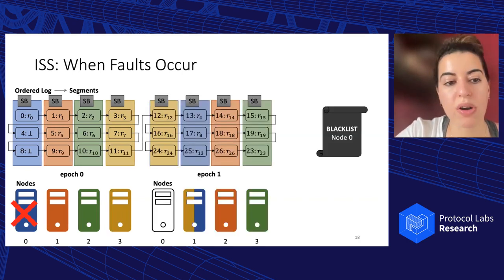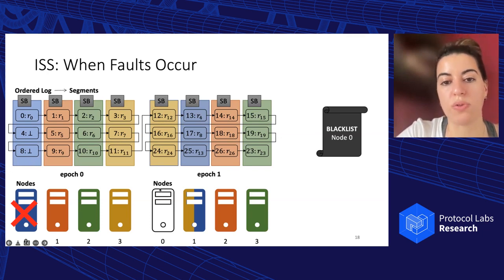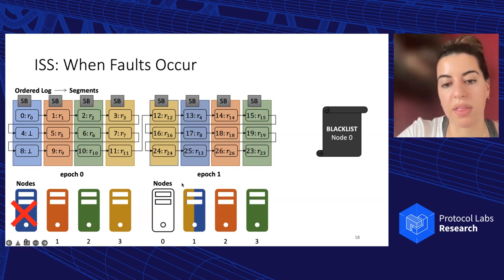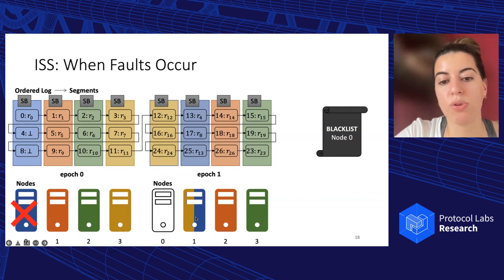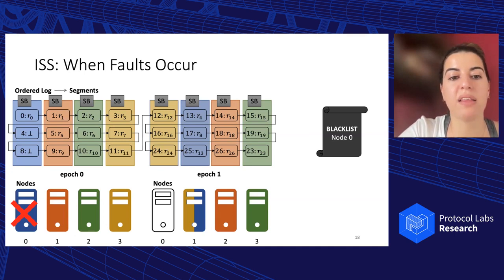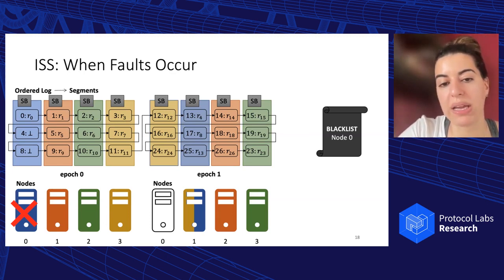In the next step, since we realized node 0 was not able to finish the segment, we exclude node 0 from the leader set and assign all segments among the remaining nodes. For example, in the next epoch, node 1 acts as leader for both the yellow and the blue segment. While this may look imbalanced, in practice we have many more segments than nodes, so we can better load-balance the segments of the crashed node once it's gone.